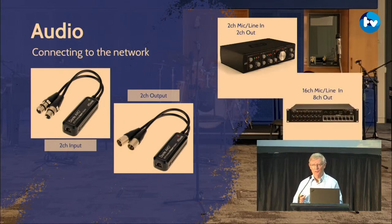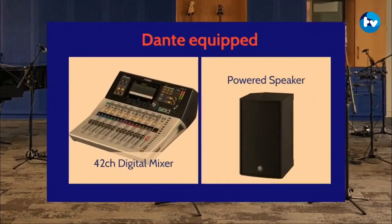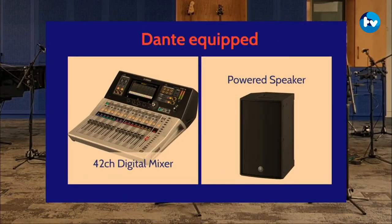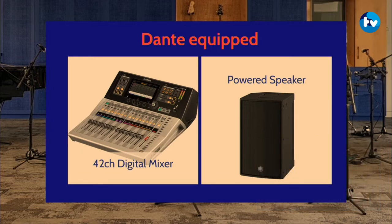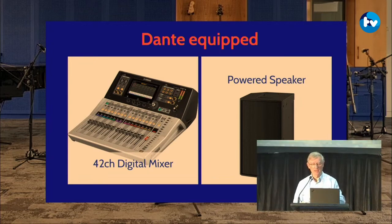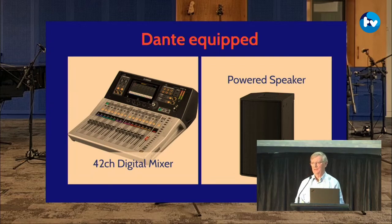Then you get bigger ones — a Yamaha unit with 16 inputs with mics and preamps, eight outputs, which just plugs into the network with one cable and one power cable. Then you get dedicated devices that connect directly to the network without adapters. For example, a 42-channel Yamaha TF series mixer, and powered speakers like the Yamaha DZR12D — 'D' meaning Dante. These just plug into the network, so you can send audio from that mixer to that speaker with no adapters, just any data point to any data point. And you can send to lots of speakers simultaneously, making it very flexible.